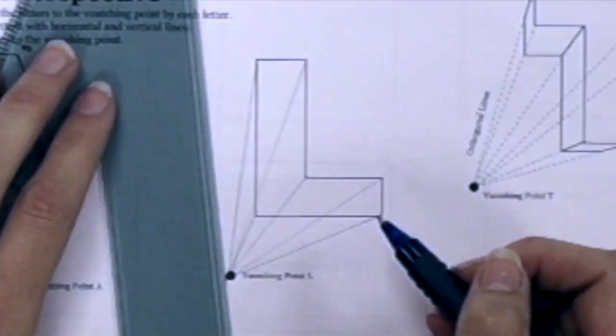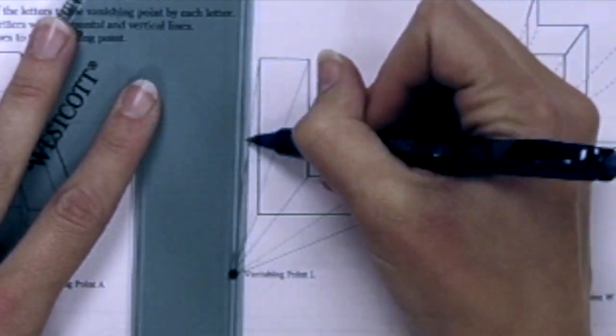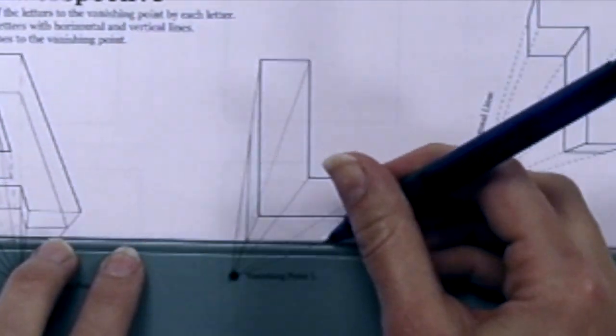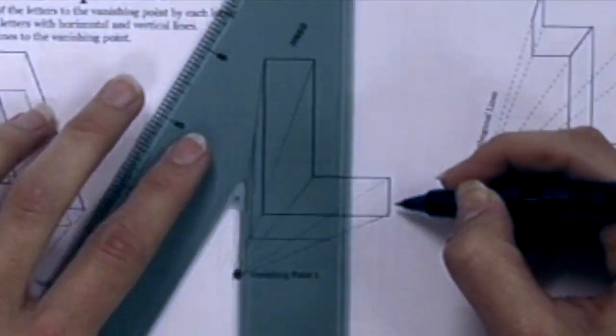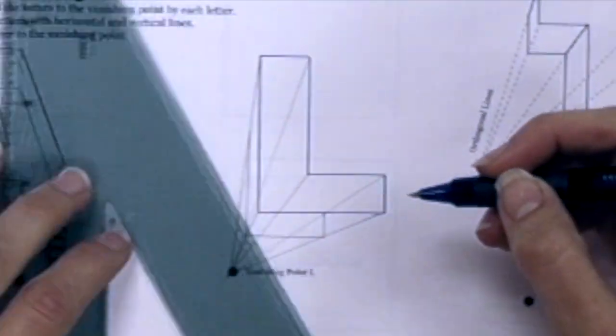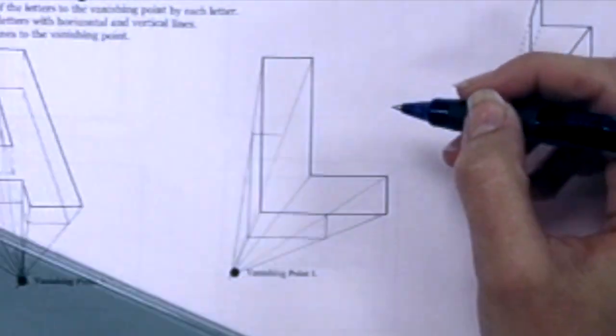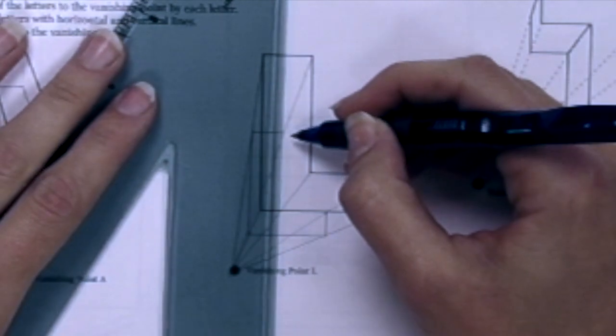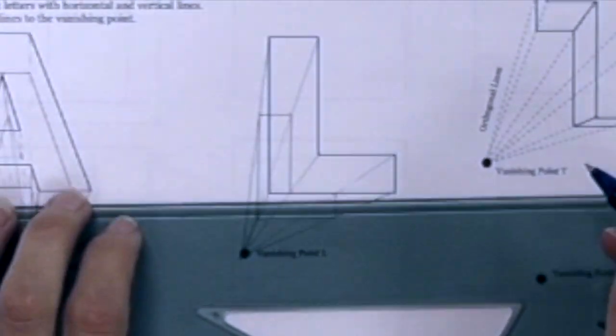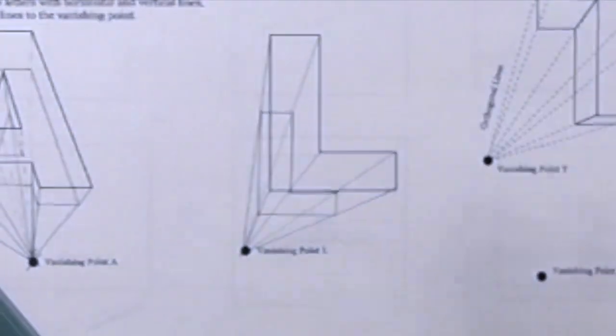Follow the same procedures here. Look for corners, or points, around the letter L. Draw them all back to the vanishing point and then determine how deep you want the letter to be. After that, you'll be able to recreate the L at the depth that you want, showing the back side of the box.